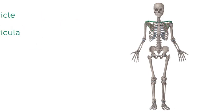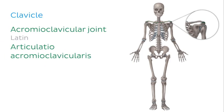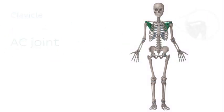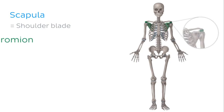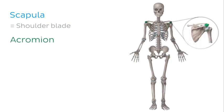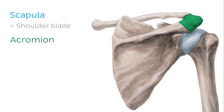The clavicle is one of the bones of the shoulder girdle. This long bone articulates with the acromion of the scapula forming the acromioclavicular joint, also known as the AC joint, which is now highlighted in green. The scapula is a flat triangular bone, also known as the shoulder blade, and is located posterior to the rib cage. Viewing the scapula from behind, we can see how the acromion of the scapula articulates with the clavicle to form the acromioclavicular joint.